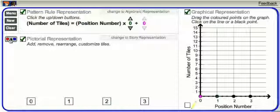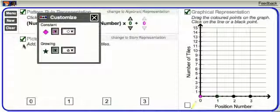Then open the customizable tile menu. Choose a color and shape for each type of tile.